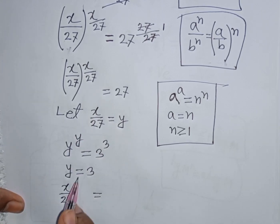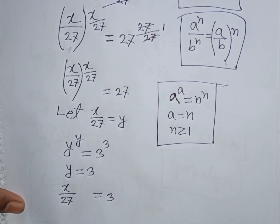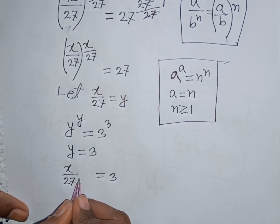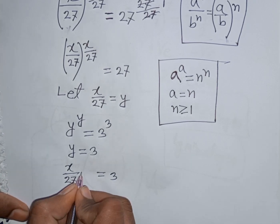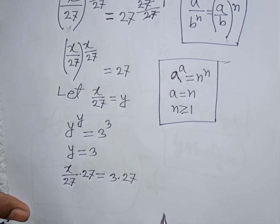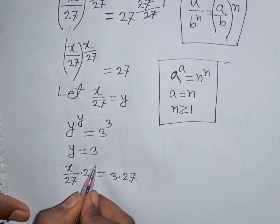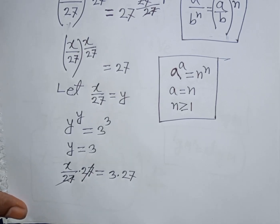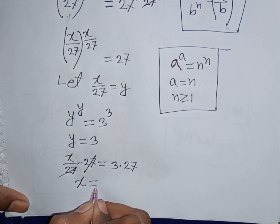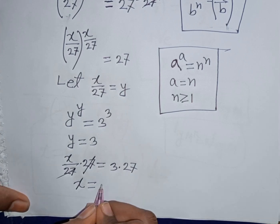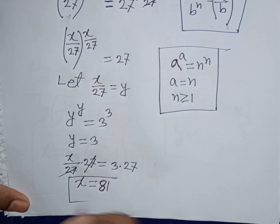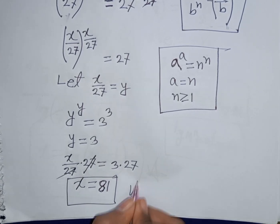Remember that y means x over 27. So x over 27 is equal to 3. Multiplying both sides by 27, this 27 will be cancelled, so x is equal to 3 multiplied by 27, which is 81. So x is equal to 81. This is our final answer.